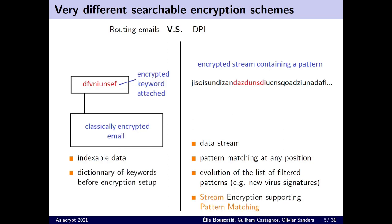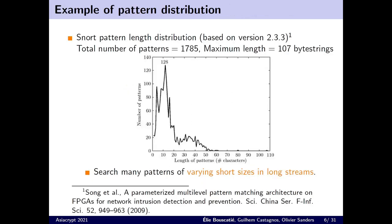Because of these differences, we call the kind of scheme we are designing a stream encryption scheme supporting pattern matching. If we take a look at the distribution of pattern lengths in the pattern list of SNORT, which is a famous open source IDS, we find that there are many patterns of different lengths. But they are all short. So the task of an IDS is to search many patterns of varying short lengths in long streams.